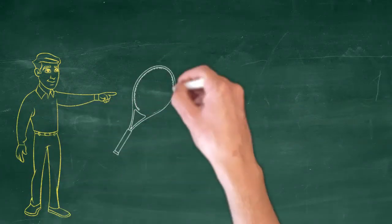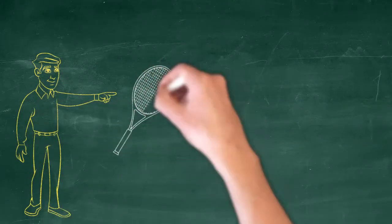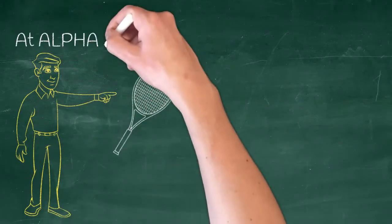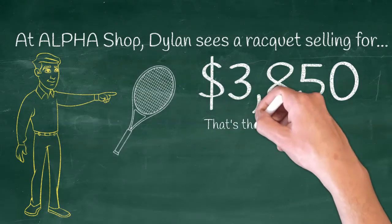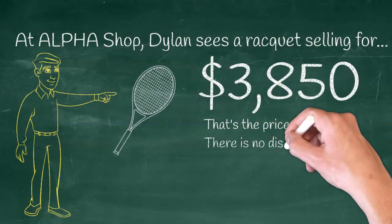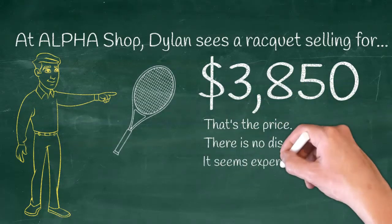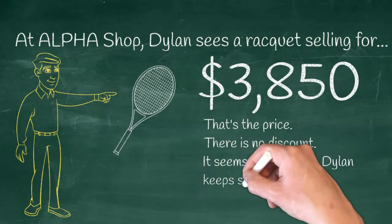At Alpha Shop, Dylan sees a racket selling for $3,850. That's the price — there's no discount. It seems expensive, so Dylan keeps shopping.